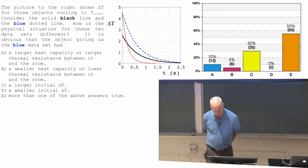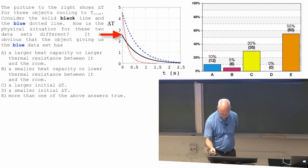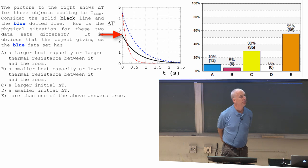C, larger initial delta T for blue. Yes. Blue started at about 4.5, black started at about 2.5, so blue had a larger initial delta T. Assuming T room is the same for both of them, that means blue started out at a higher temperature.